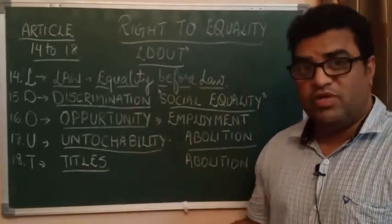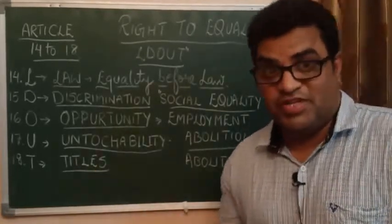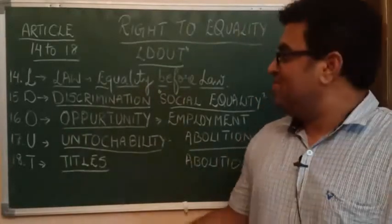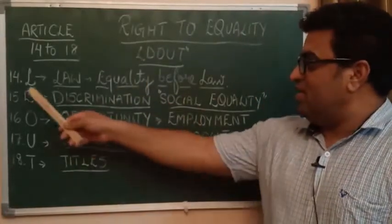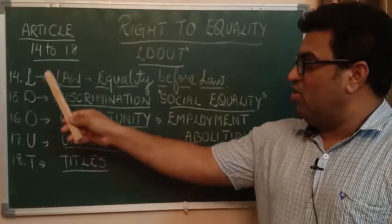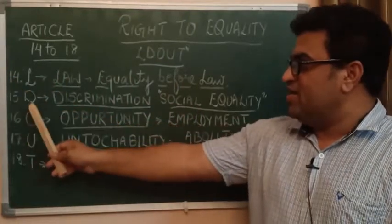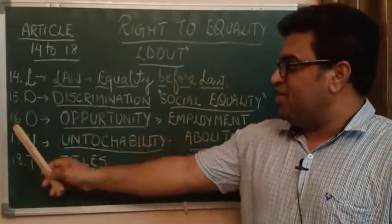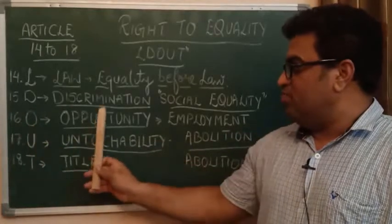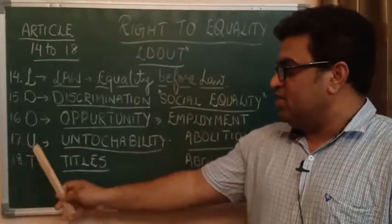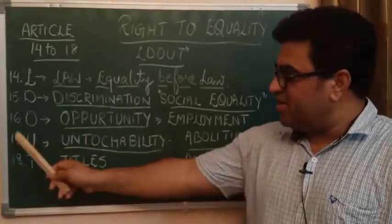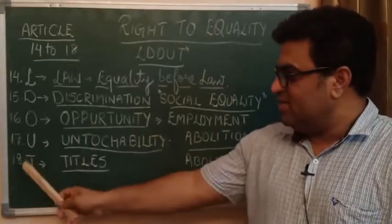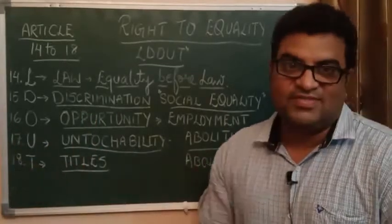So this is all about the trick. L for Law, Article 14. D for Discrimination, Article 15. O for Opportunity, Article 16. U for Untouchability, Article 17. T for Titles, Article 18. That's it.